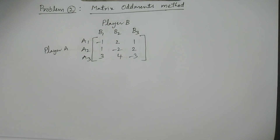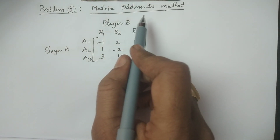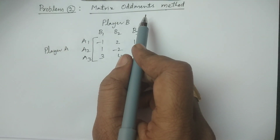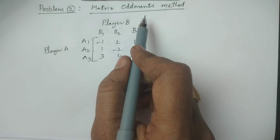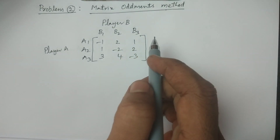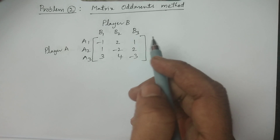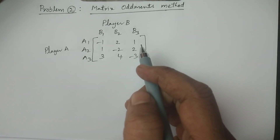Welcome to BSc statistics students. In this lesson I explain one of the problems in the matrix oddments method. For any kind of method, first of all you have to check for a given game whether a saddle point exists or not.